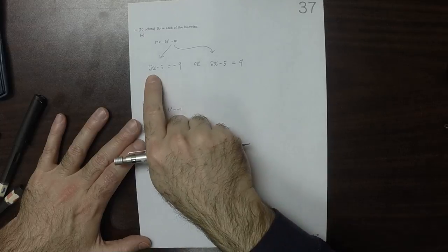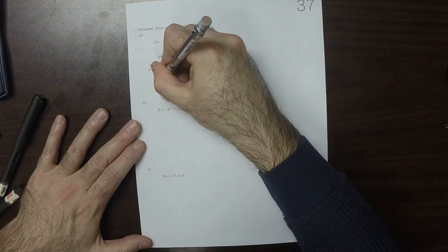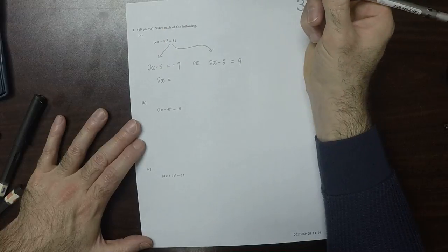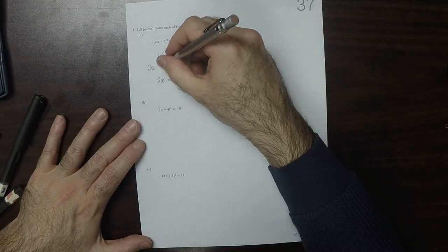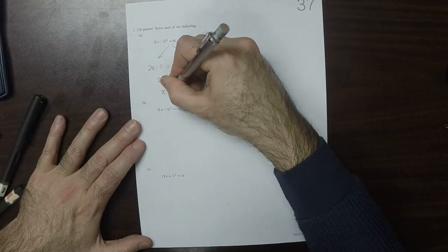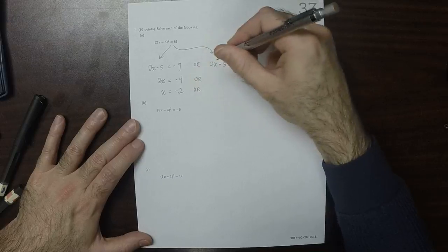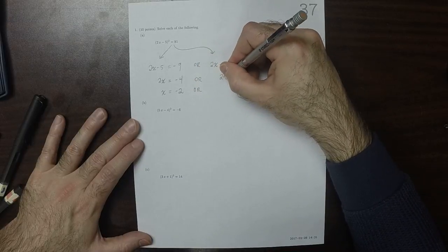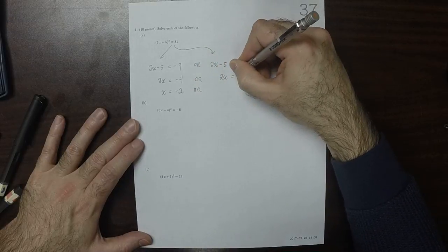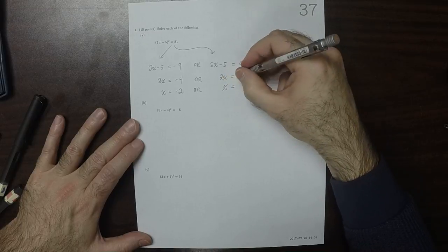Since we're squaring 2x minus 5 to get 81, that'd be 2x is, add 5, so negative 4, so x is negative 2, or 2x is 14, so x is 7.